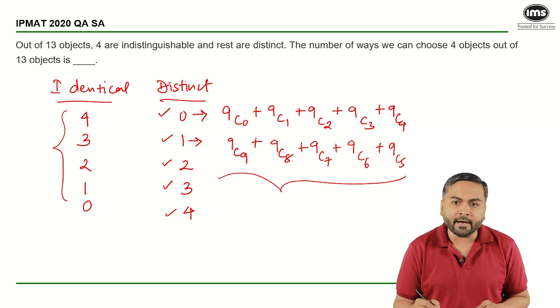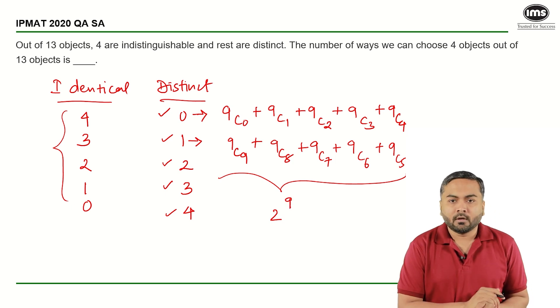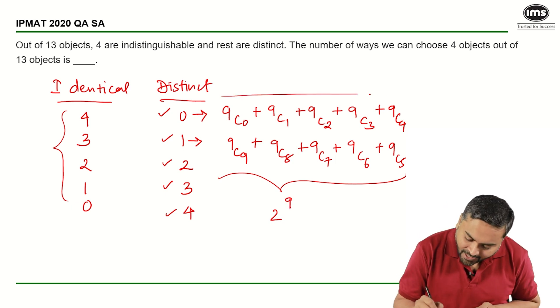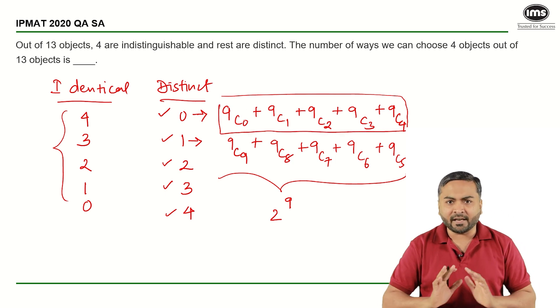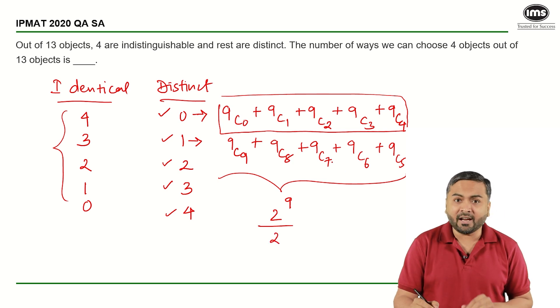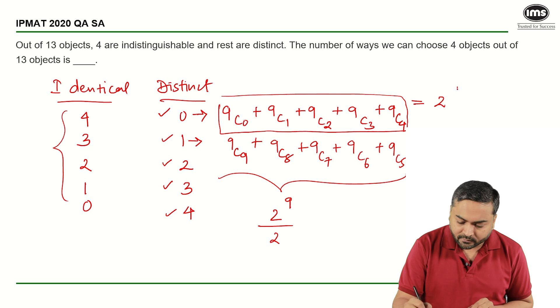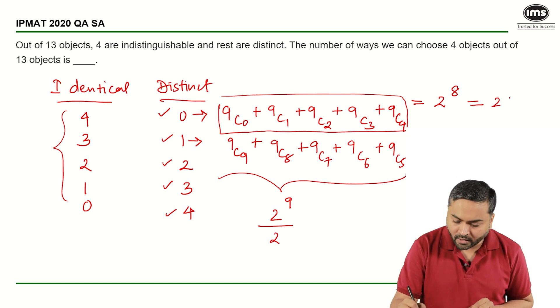If you add all of them, we know that this will turn out to be 2 raised to 9. But the first half is the required answer and that is equal to the second half, so both of them are equal. So the required answer here will be nothing but 2 raised to 8, and that is nothing but 256. And that is the correct answer.